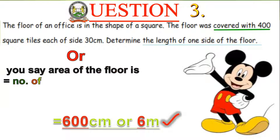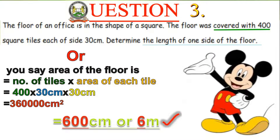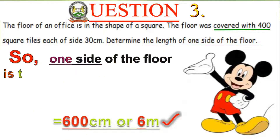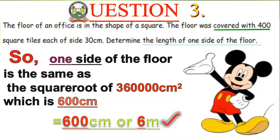Alternatively: the area of the floor equals the number of tiles used times the area of one tile. Number of tiles is 400, and the area of one tile is 30 × 30. This gives 360,000 square centimetres. Since the floor is a square, find the square root of 360,000 cm², which equals 600 centimetres.